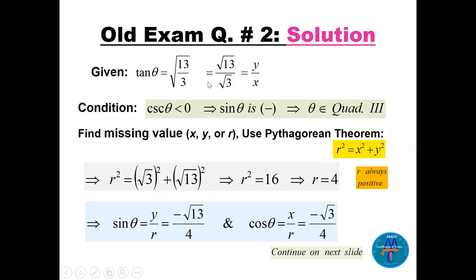Since csc(θ) is negative, sin(θ) is also negative (as they are reciprocals). Tan is positive in Quadrant 1 and Quadrant 3, but since sin(θ) is negative, θ lies in Quadrant 3. Using r² = x² + y², we get r² = 16, so r = 4. Thus sin(θ) = -√13/4.